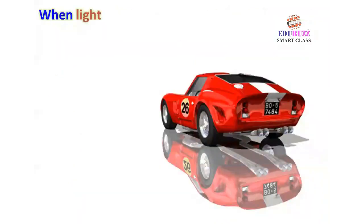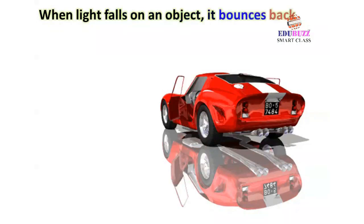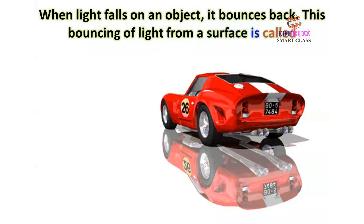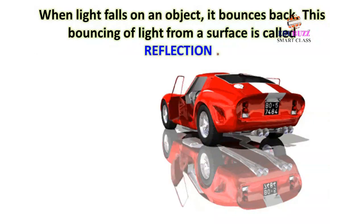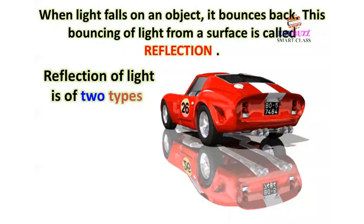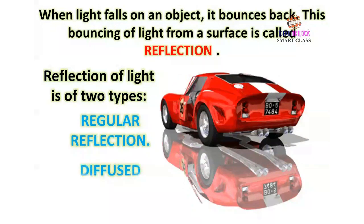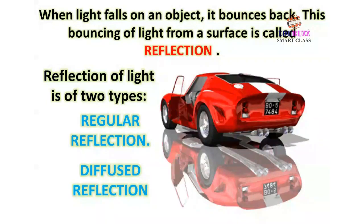When light falls on an object, it bounces back. This bouncing of light from a surface is called reflection. Reflection of light is of two types: regular reflection and diffused reflection.